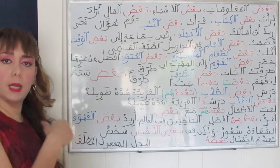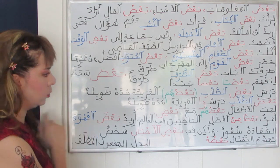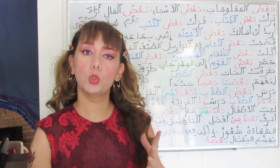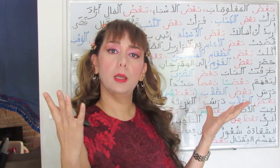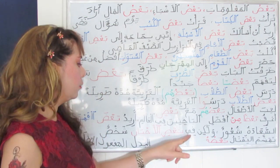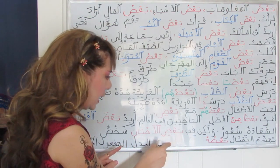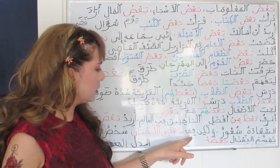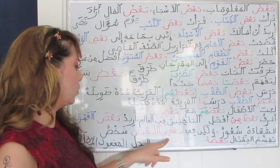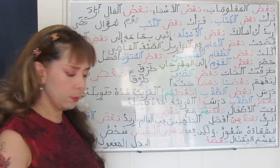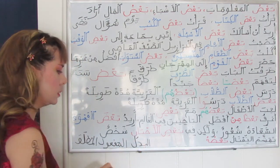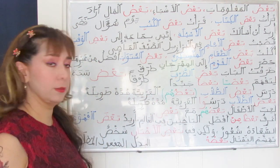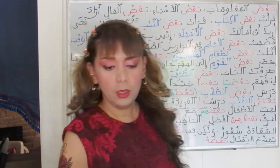Uridu ba'da al-qahwati — I want some coffee. Also: al-sa'adatu shu'ur — happiness is a feeling — wa lakin fi ba'di al-ahyani — but sometimes. Ba'du al-ahyani means 'sometimes.' Since it is preceded by the preposition fi, it will be in the genitive case. So happiness is a feeling but sometimes a person... do you agree with me?